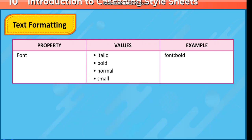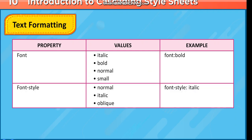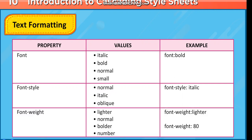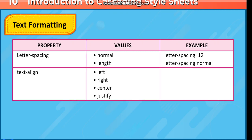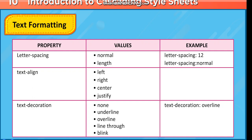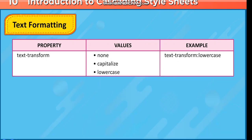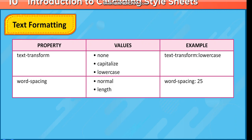Property: Font; Values: italic, bold, normal, small. Property: Font-style; Values: normal, italic, oblique; Example: font-style: italic. Property: Font-weight; Values: lighter, normal, bolder, number; Examples: font-weight: lighter, font-weight: 800. Property: Letter-spacing; Values: normal, length; Examples: letter-spacing: 12, letter-spacing: normal. Property: Text-align; Values: left, right, center, justify. Property: Text-decoration; Values: none, underline, overline, line-through, blink; Example: text-decoration: overline. Property: Text-transform; Values: none, capitalize, lowercase; Example: text-transform: lowercase. Property: Word-spacing; Values: normal, length; Example: word-spacing: 25%.